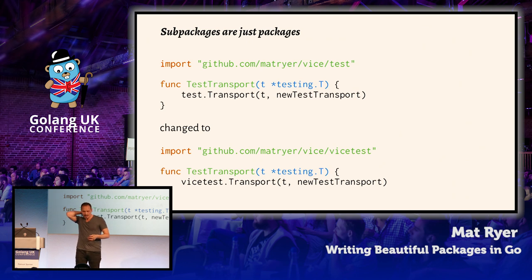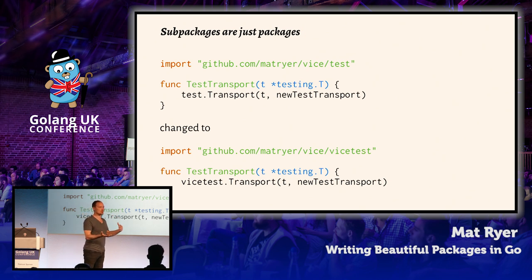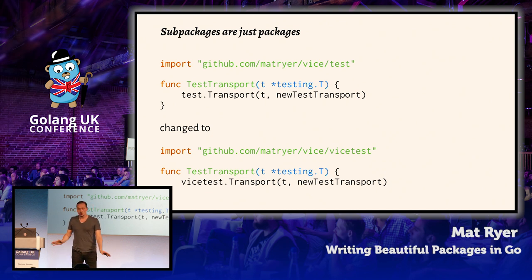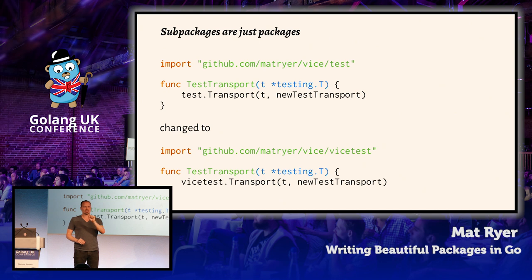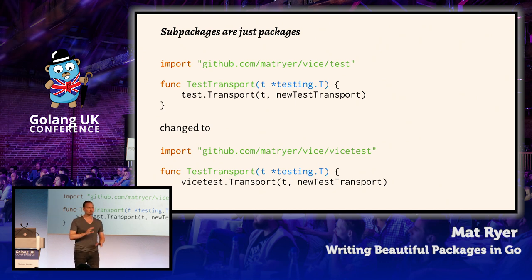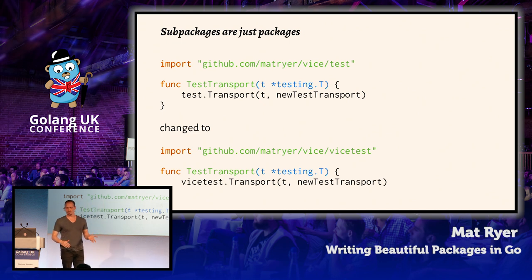Sub-packages are just packages. We did this with Vice — originally we had a test package. It's basically a function you call in test code and it tests an implementation against the interface. If you want to write an implementation for Vice, as long as these tests pass, it's good. But if you look at the import path, it was 'vice/test', so in that context it's very clear, but in the code the package name was just 'test' — so you're saying 'test.Transport' and it's not sure what that is. So we changed it to 'vicetest'. There's a bit of redundancy now in the import path, but it's probably worth it because now in the function bodies we say 'vicetest.Transport', which is very clear and obvious.